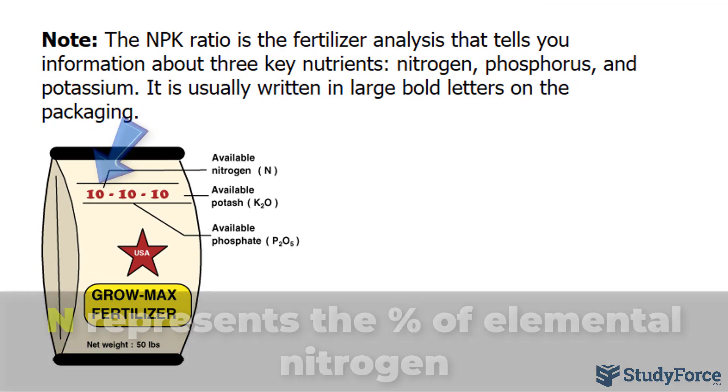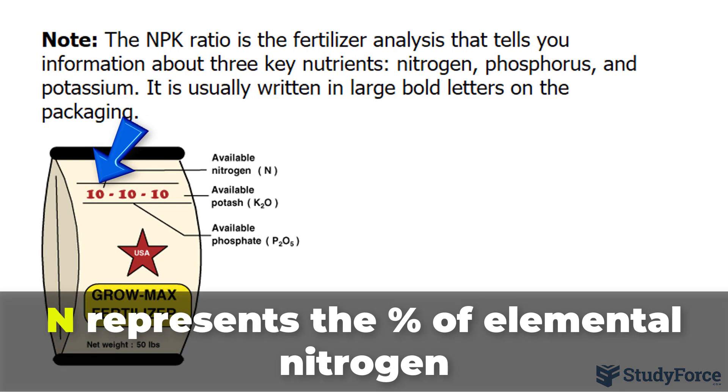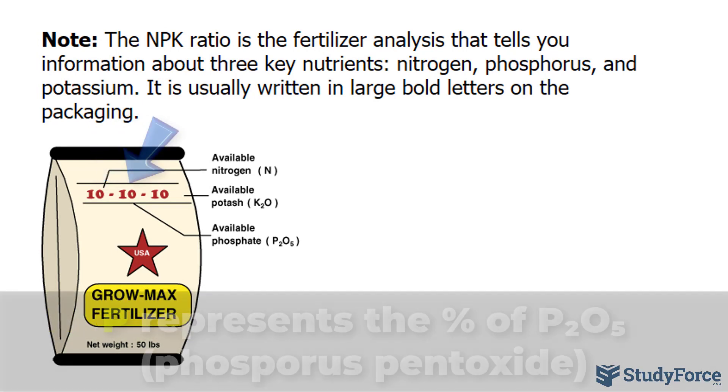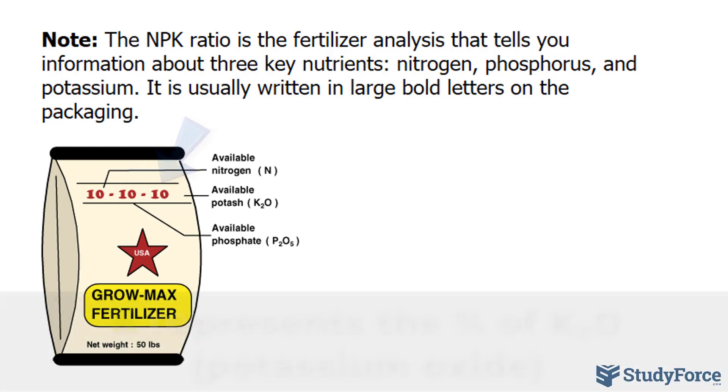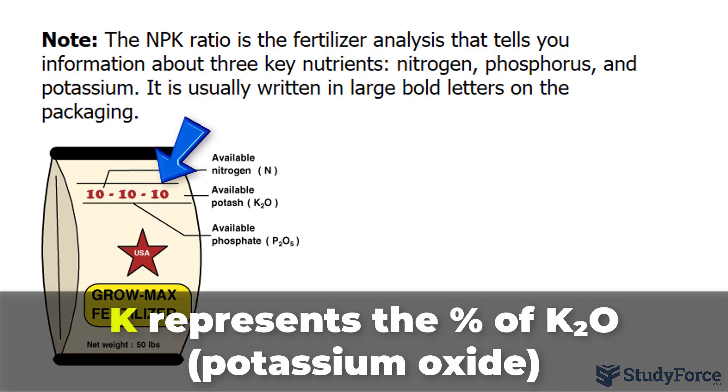The N represents the percentage of elemental nitrogen found in the package. P represents the percentage of phosphorus pentoxide, which has the chemical formula P2O5, and when combined with water, forms phosphoric acid. And K represents the amount of potassium oxide. It has the chemical formula K2O, and is more commonly known as potash.